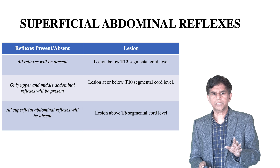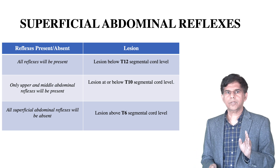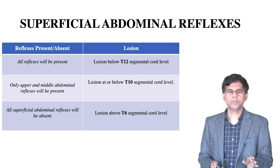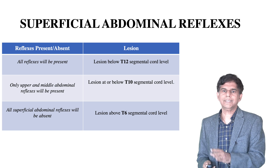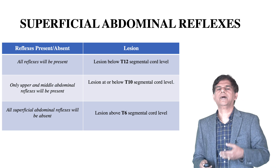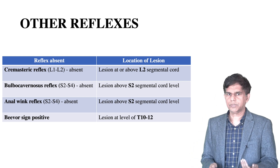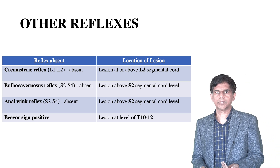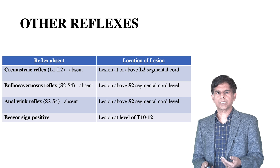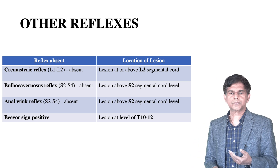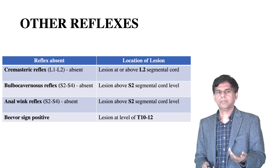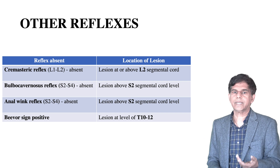Superficial abdominal reflexes also need to be checked. All reflexes are present in lesions below T9. Only upper and middle abdominal reflexes are present in lesions at or below T10. All superficial abdominal reflexes are absent if the lesion is above T6. Cremasteric reflex (L1-L2) absent indicates lesion at L2. Bulbocavernosus reflex (S2-S4) indicates lesion at S2. Anal wink reflex indicates lesion at S2. Positive Beevor sign indicates lesion at T10-T12.